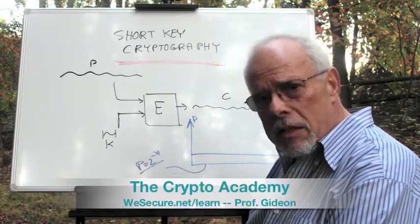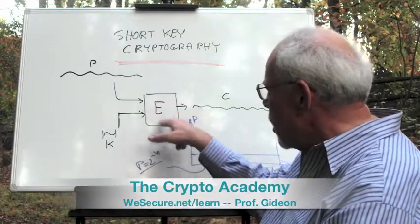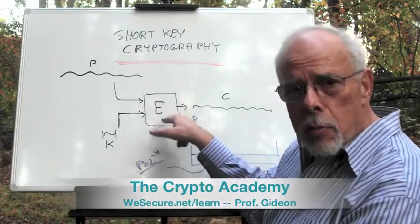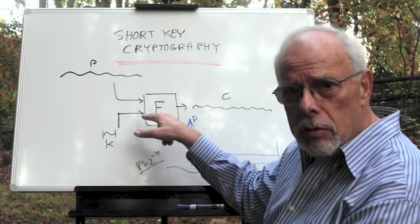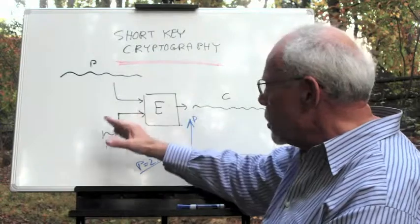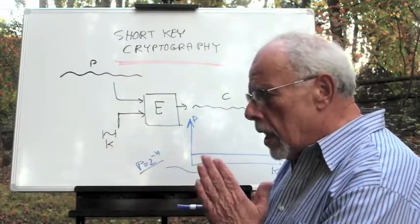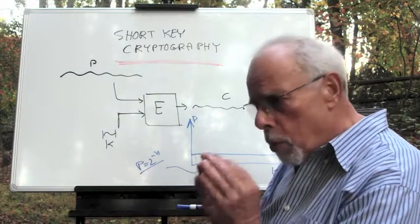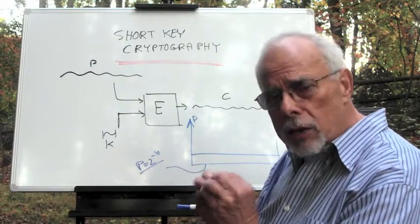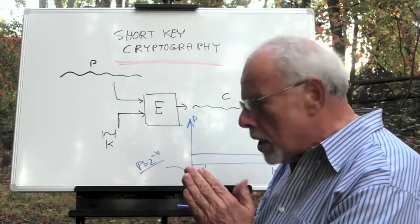This fact, on its own, regardless of the nature of this box here, of the encryption, just the fact that this is long, this is long, this is short, can be shown with probability calculations to indicate certain properties.